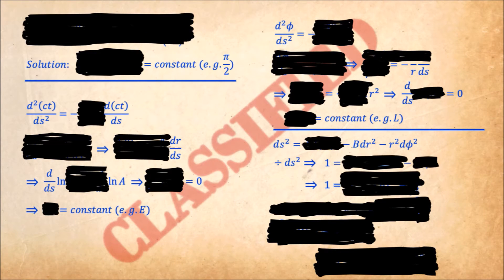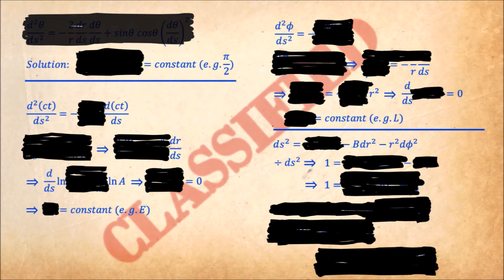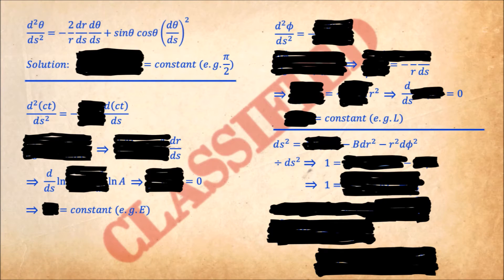Plugging in the expressions for the Christoffel symbols, we get an equation for theta that looks like this. Notice that every term in this equation has a factor of at least one derivative of theta, which means d theta ds equals to zero is a solution. It also means that theta must be a constant, which we will choose to be pi over 2 for convenience. What this says is that the orbital plane does not change with time. This is true in Newton's gravity and it is true here as well.